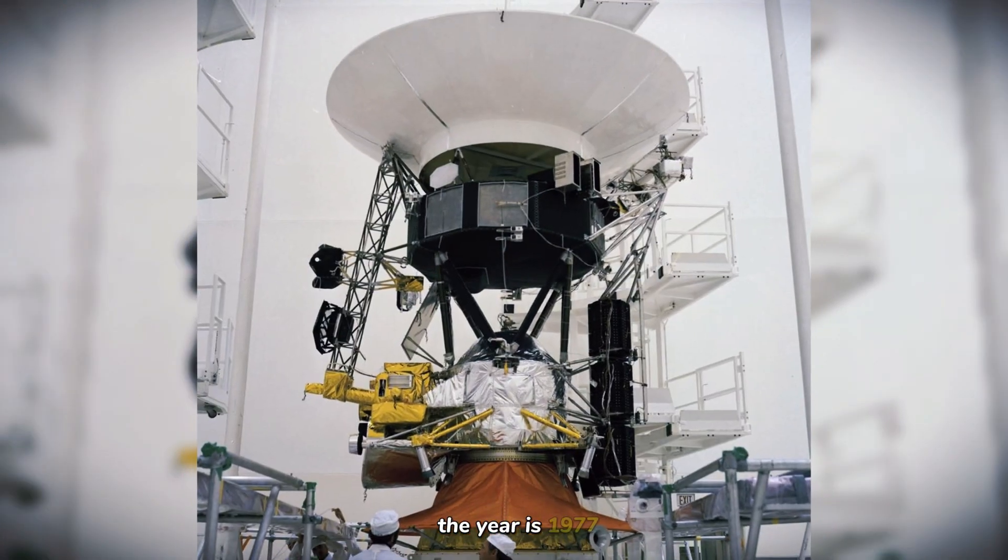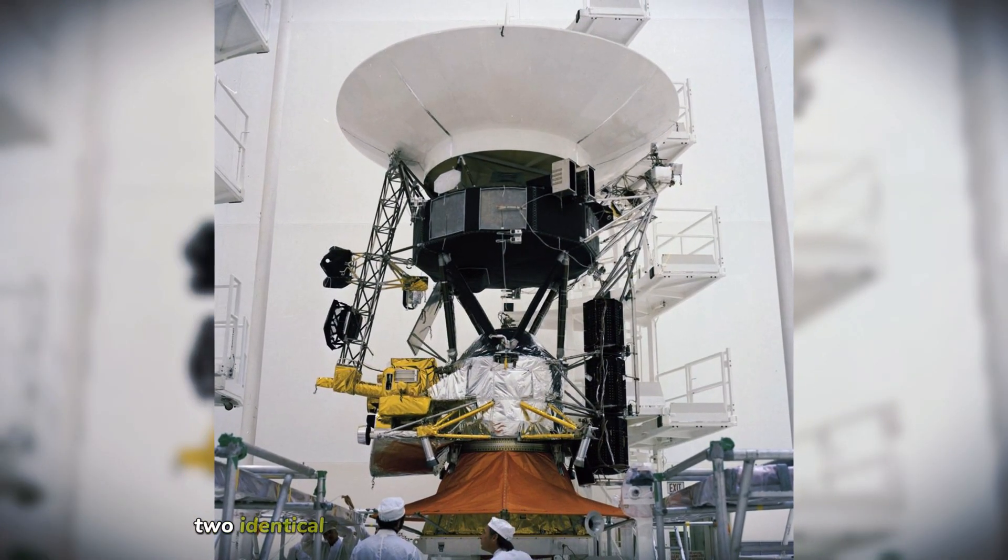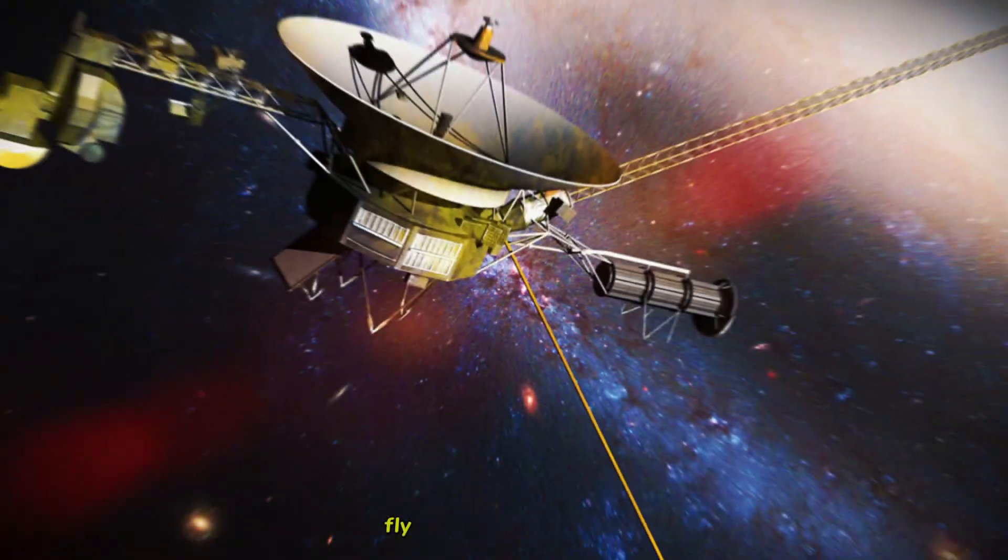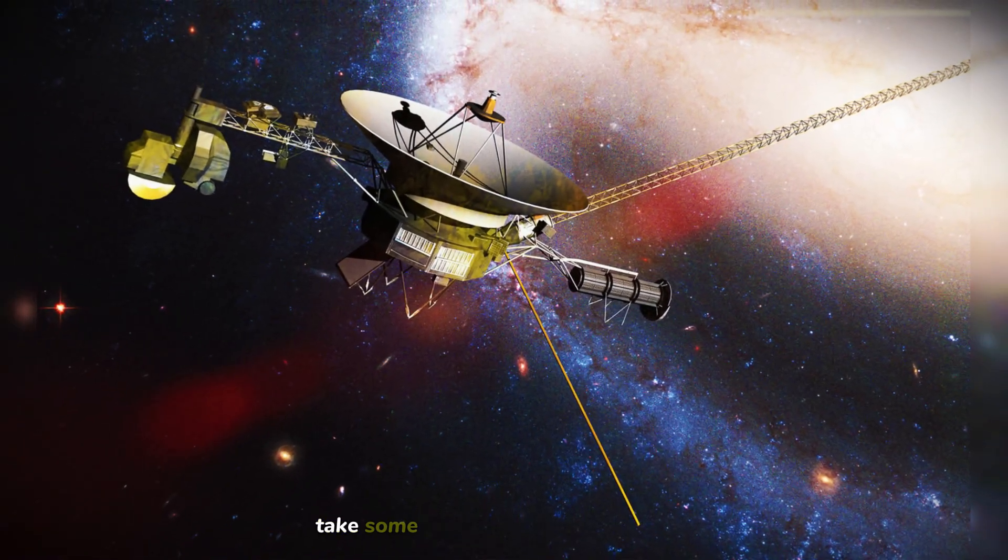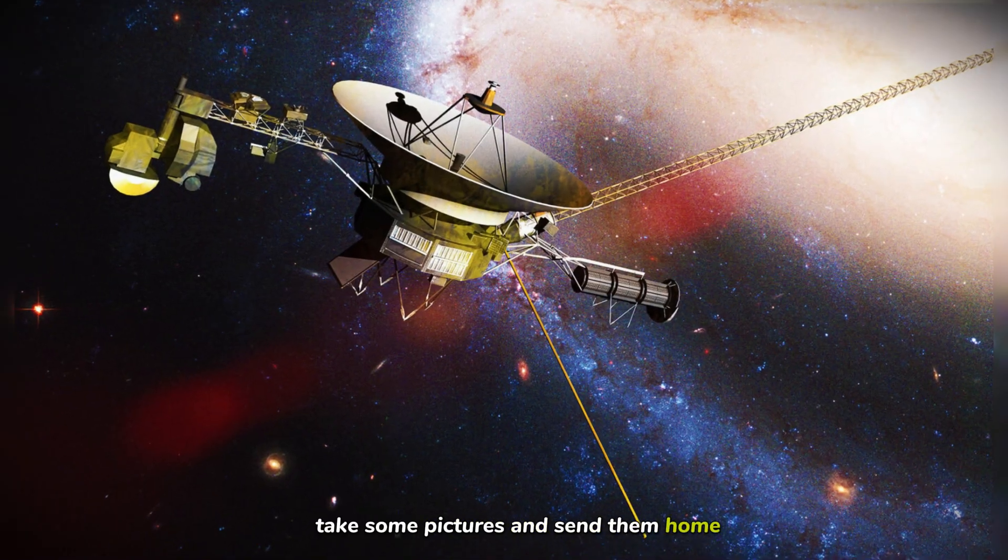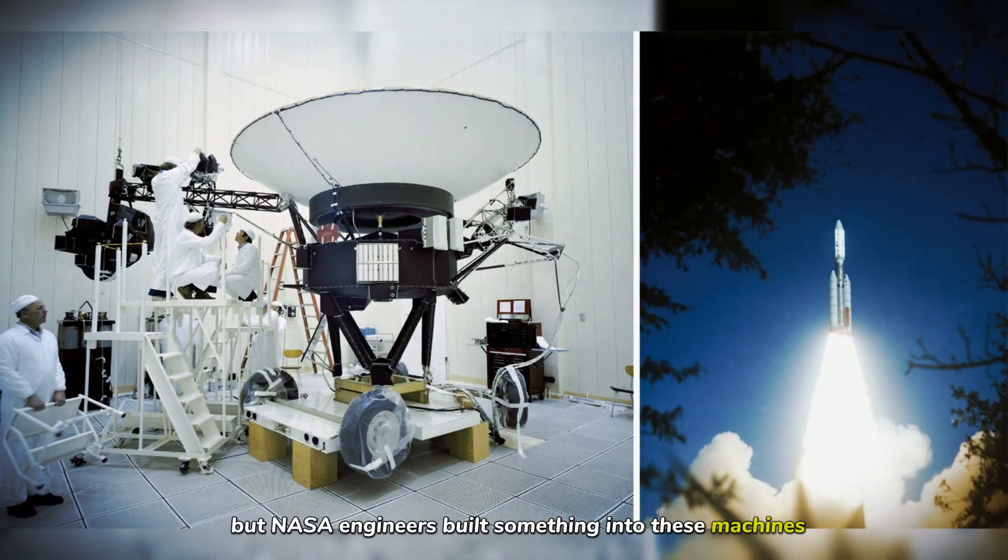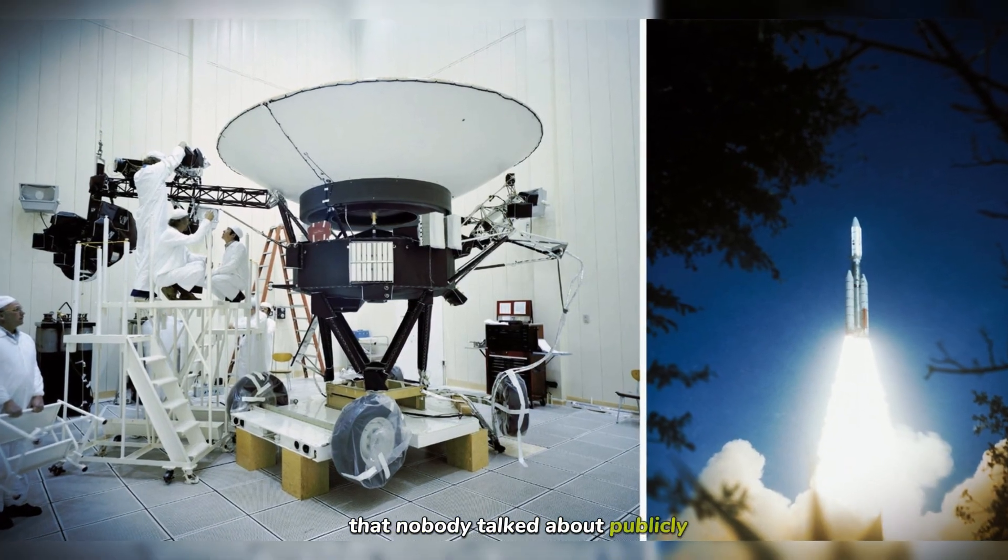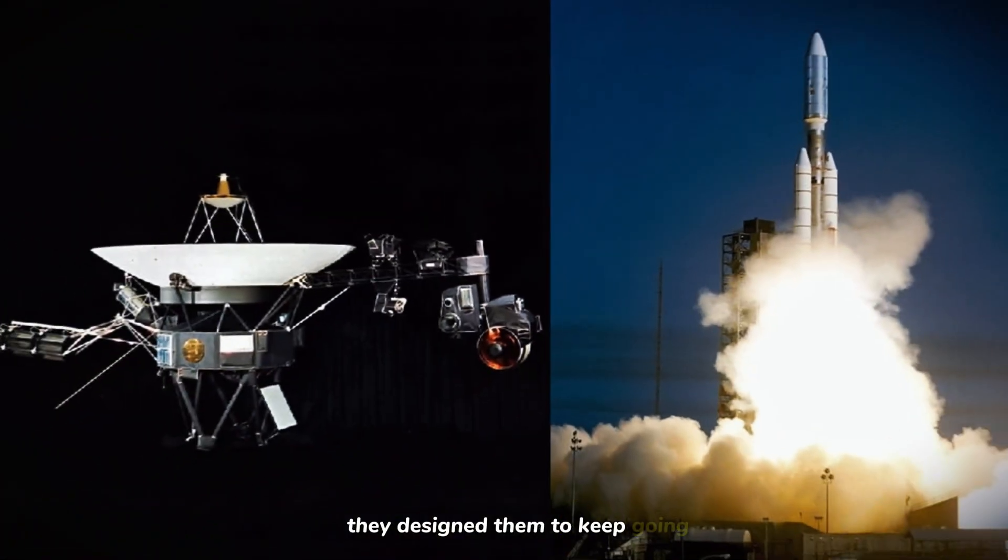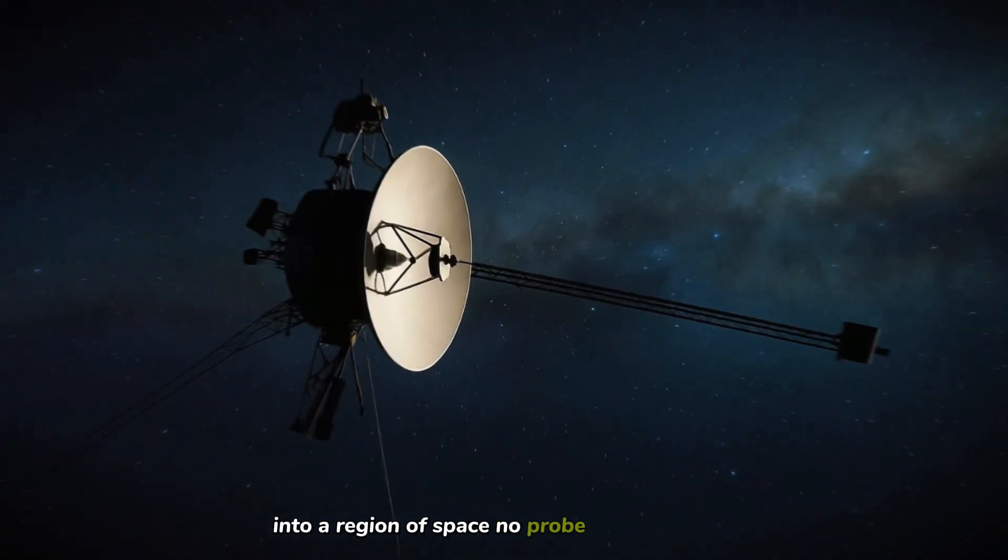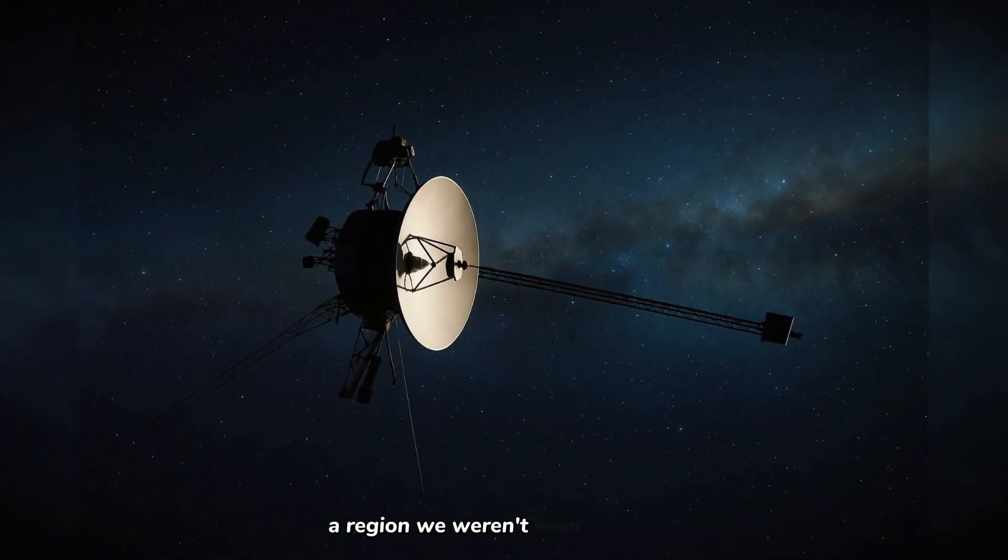The year is 1977. Two identical spacecraft launch from Earth with a simple mission: fly past Jupiter and Saturn, take some pictures, and send them home. But NASA engineers built something into these machines that nobody talked about publicly. They designed them to keep going, to push beyond the planets into a region of space no probe had ever reached, a region we weren't even sure existed.